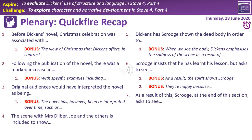Number one: before Dickens' time, Christmas celebration was associated with the countryside and peasant revels. Bonus: the view of Christmas that Dickens offers in contrast is about an urban festival of giving, generosity, and collective experience. Number two: following the publication of the novel, there was a marked increase in charitable giving. Bonus: specific examples include Robert Louis Stevenson, Thomas Carlyle, and the American businessman with the turkeys. Number three: original audiences would have interpreted the novel as being both spiritual and secular, and as a religious allegory. Bonus: the novel has been reinterpreted over time, such as in the early 20th century when it became viewed as a children's story, or during the American Depression when it became an allegory about Bob Cratchit and the plight of the working man.